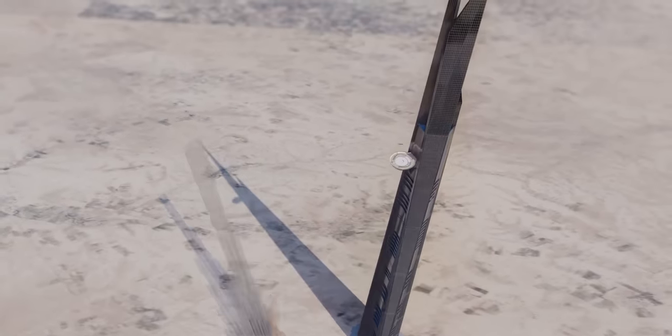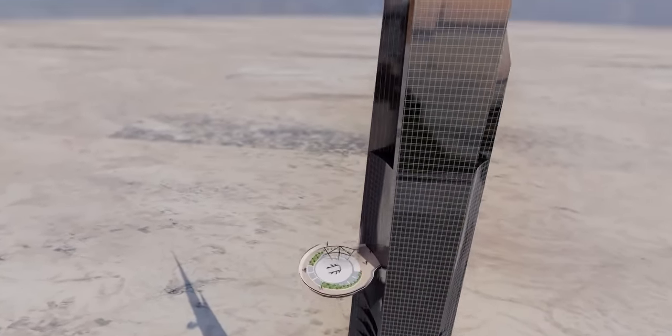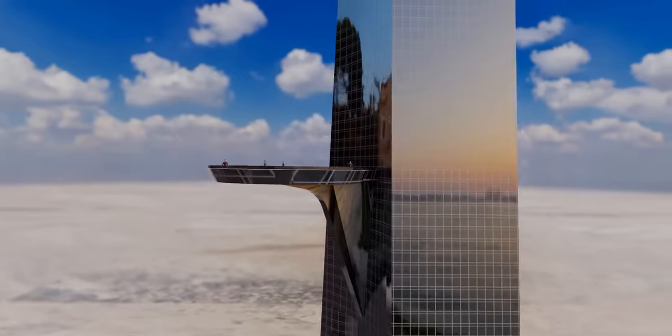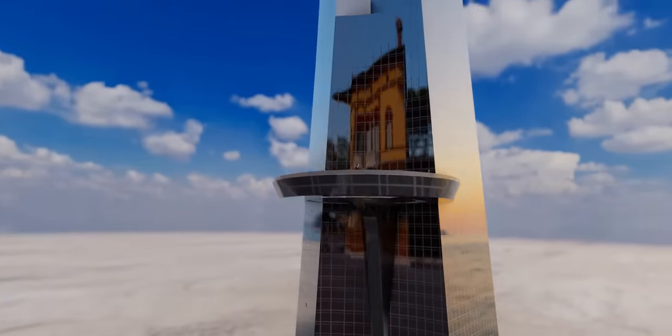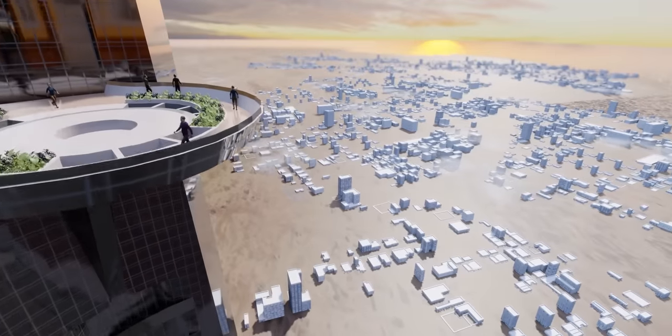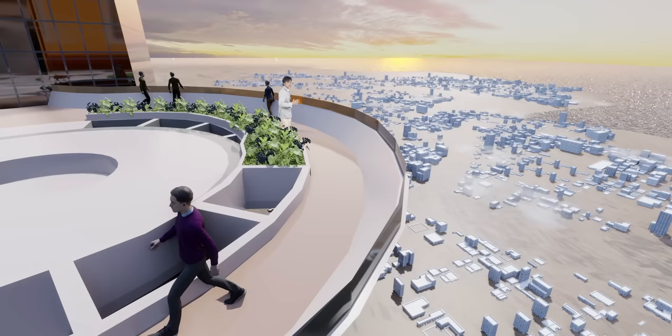Did you notice a beautiful protruding circular structure on Jeddah Tower? This is in fact an observation deck, obviously the tallest observation deck in the world, quite unique as well. This observation deck is protruding. You might have seen in other buildings, the observation deck is within the building. What a beautiful view.